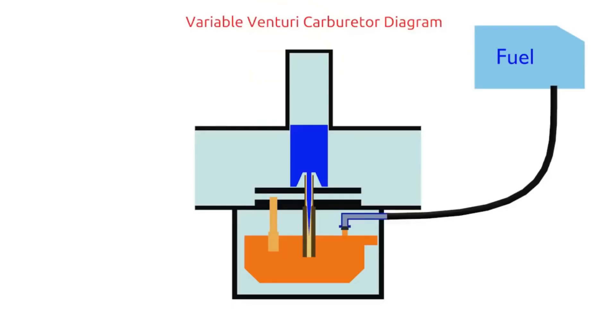So when the engine is idle, the piston is in the lowest position. It makes the Venturi very narrow. And the main jet is also covered by needle jet. This condition forces air to flow through the idle air channel and fuel out through the pilot jet.